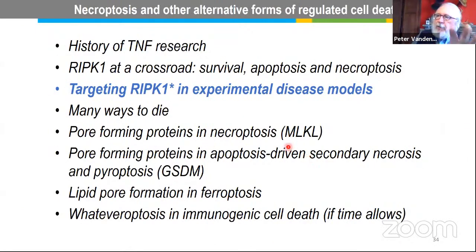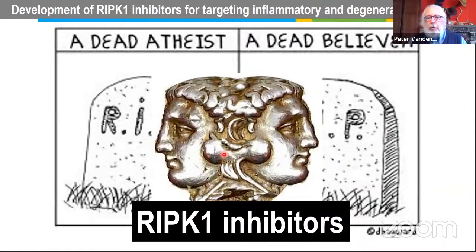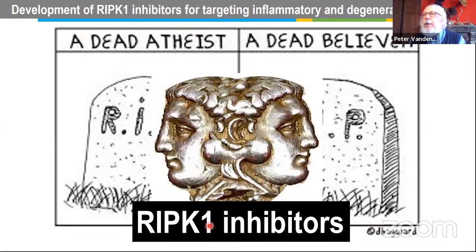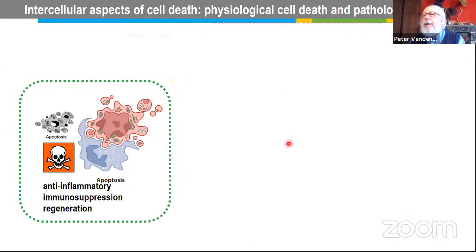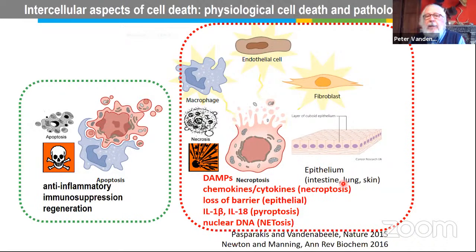The importance of RIPK1 is both as a survival factor and platform function, and as a kinase that will induce apoptosis and necroptosis. In view of the many diseases in which RIPK1 has been shown to play a role, this created a lot of interest. The whole idea was that when you have induction of necrotic cell death, you have release of DAMPs, and that amplifies the inflammation process, playing a role in many inflammatory diseases.